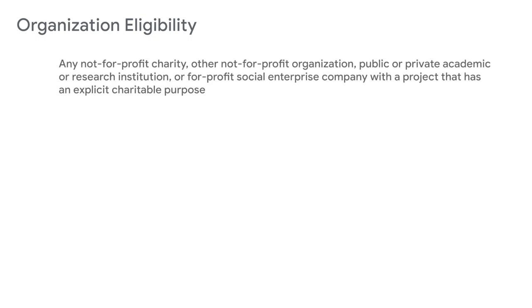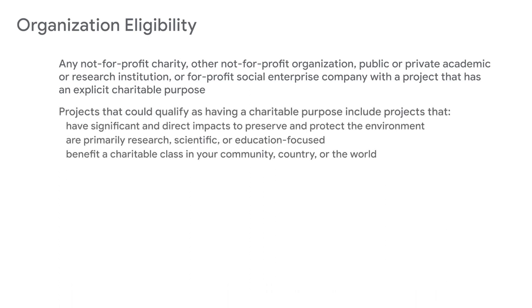A frequently asked question is whether we can determine an organization's eligibility. Unfortunately, Google.org cannot determine your eligibility ahead of your application. Therefore, please ensure you read the application terms and the frequently asked questions on our website before submitting. The criteria for eligibility are as follows. First, you must be a not-for-profit charity, other not-for-profit organization, public or private academic or research institution, or for-profit social enterprise company with a project that has an explicit charitable purpose. Second, projects that could qualify as having a charitable purpose include projects that have significant and direct impacts to preserve and protect the environment for the benefit of the public.